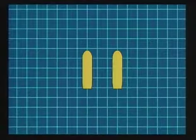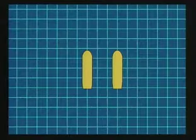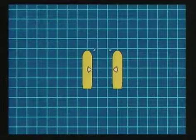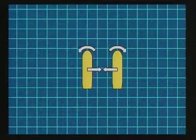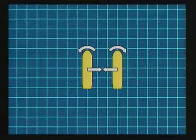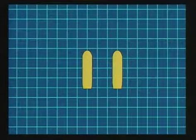When two ships run abreast, strong suction at the midships and bow outward moments are generated between them.